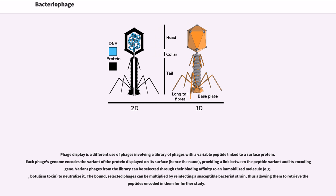Variant phages from the library can be selected through their binding affinity to an immobilized molecule — for example, botulism toxin — to neutralize it. The bound, selected phages can be multiplied by reinfecting a susceptible bacterial strain, allowing retrieval of the peptides encoded in them for further study.